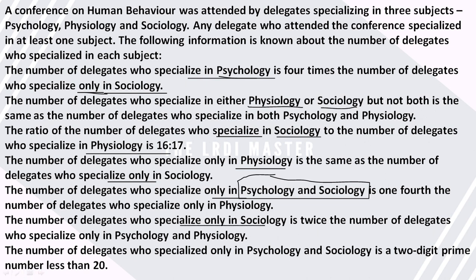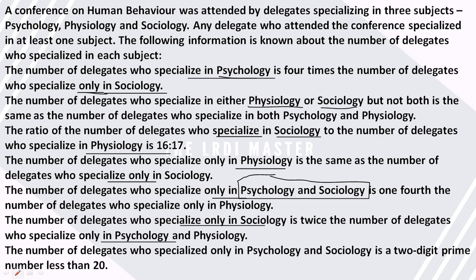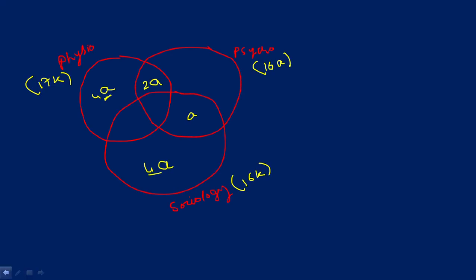The number of delegates who specialized only in sociology is twice the number of delegates who specialized only in psychology and physiology. So this region will be 2, and the number of delegates who specialized only in psychology and sociology is a two-digit prime number less than 20. The prime numbers less than 20 are 11, 13, 17, and 19.